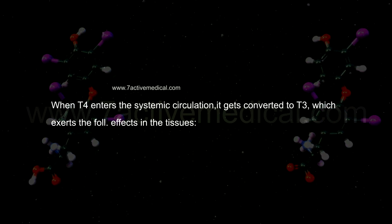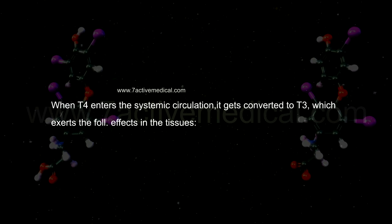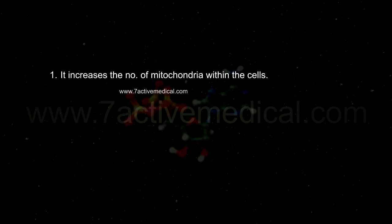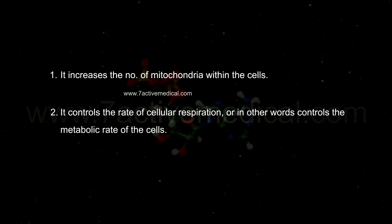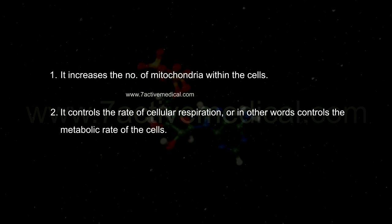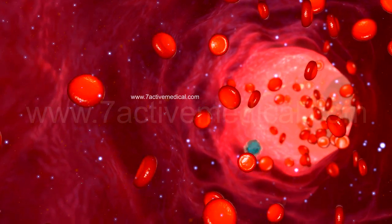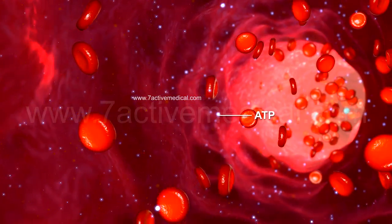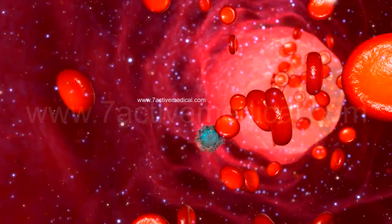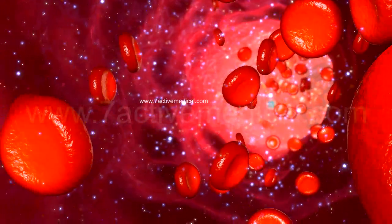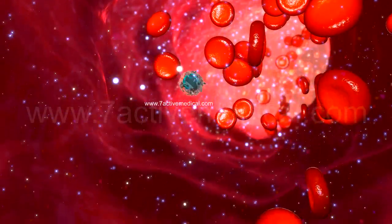When T4 enters the systemic circulation, it gets converted to T3, which exerts the following effects in the tissues. First, it increases the number of mitochondria within cells. Second, it controls the rate of cellular respiration — in other words, the metabolic rate of the cells. It accomplishes this by increasing the activity of the sodium-potassium ATPase pump, thereby increasing the hydrolysis of all available ATP, resulting in an increase in the basal metabolic rate, or BMR, as well as generating heat as a by-product of this process.